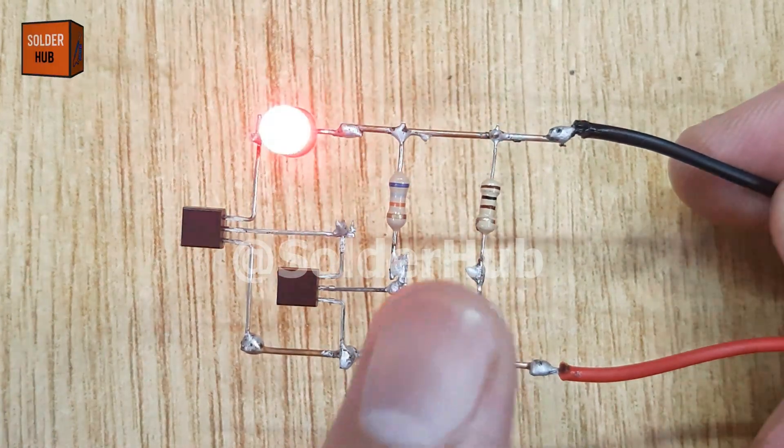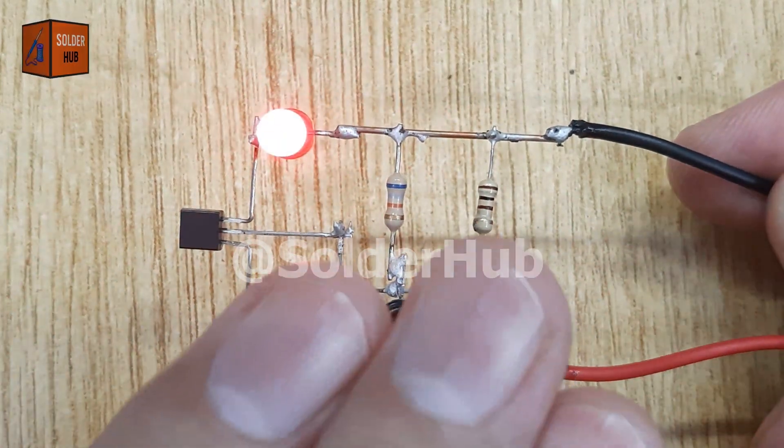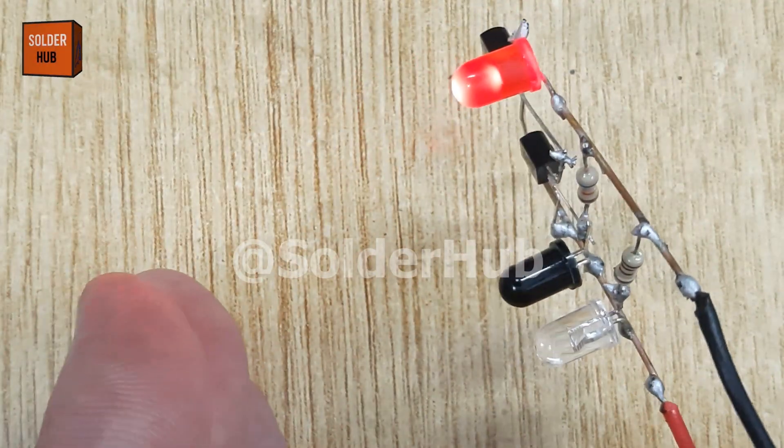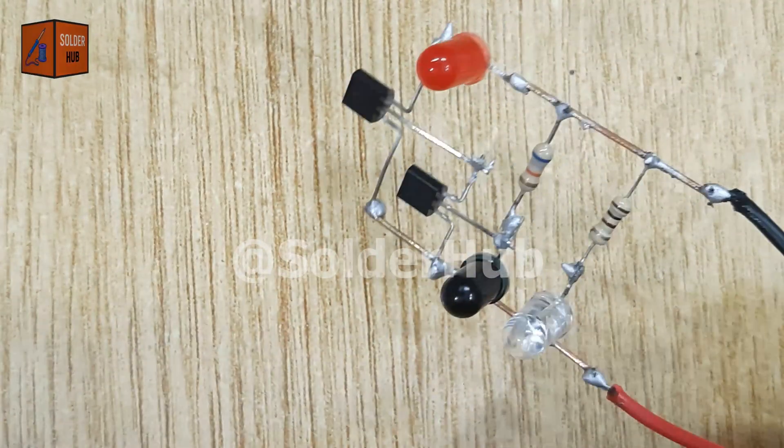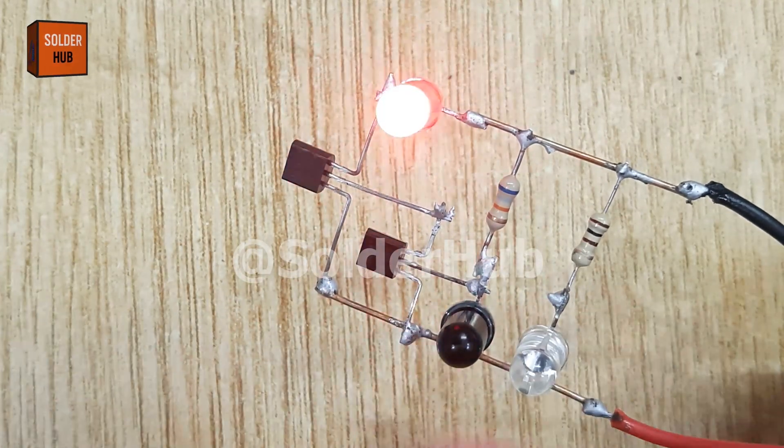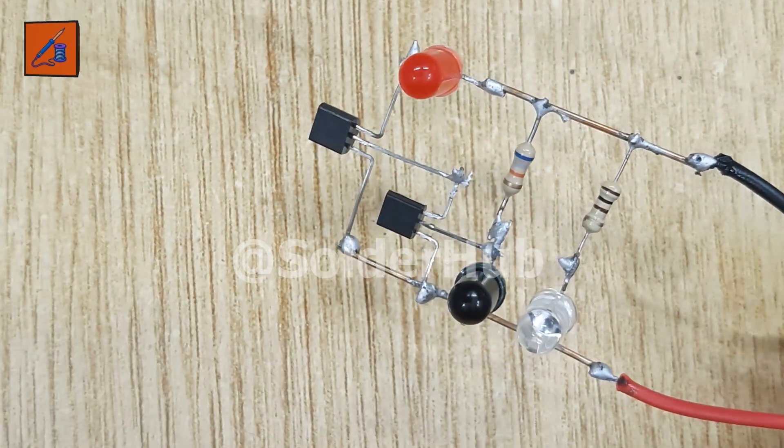Today, we're going to build something really exciting, a DIY IR proximity sensor circuit. By the end of this video, you'll see how a tiny movement of your hand or any object can turn on an LED without even touching it. Sounds like magic, right? Let's get started, step by step.